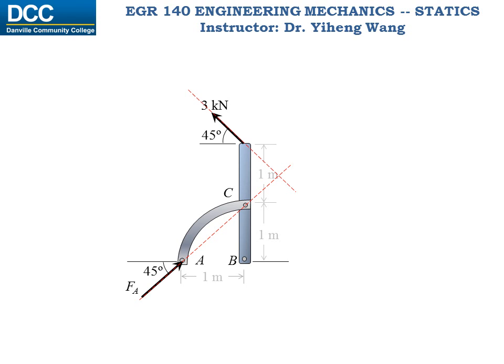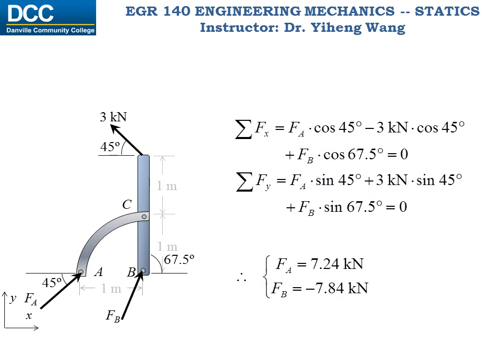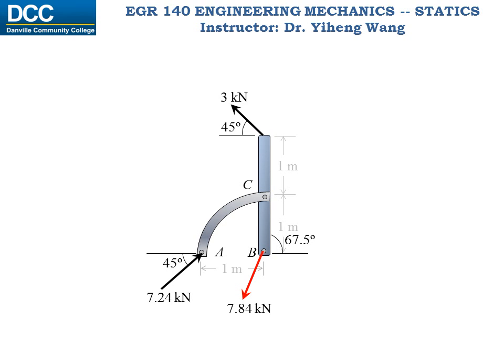Even more, we notice that member BC is also a three-force member, and we already know the direction of two forces acting on it. Therefore, the third force must be concurrent with the other two, and we can also determine the direction of the force acting at pin support B. By applying geometry, we know this angle is a 67.5 degree angle. Now we have one free body diagram with only two unknowns, and we can write two equilibrium equations to solve for both of them. A negative sign in force FB indicates that its direction is opposite to what we assumed. Hopefully you've learned from this example that by identifying two-force and three-force members, we can effectively simplify our calculation.